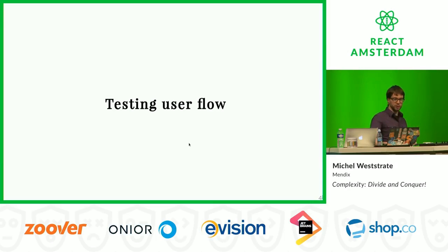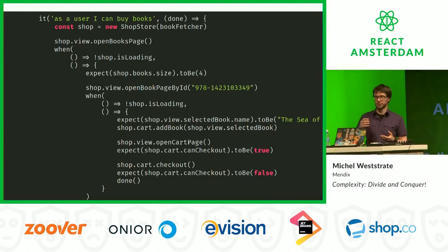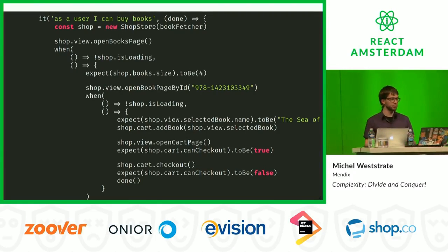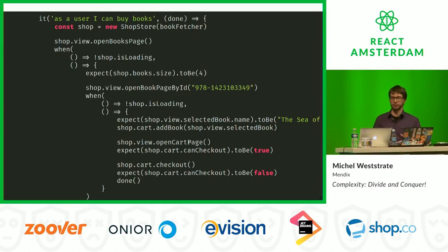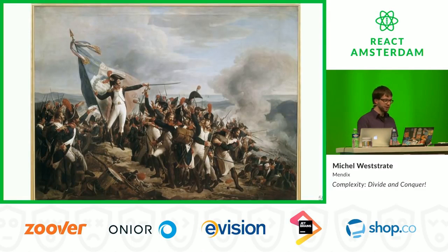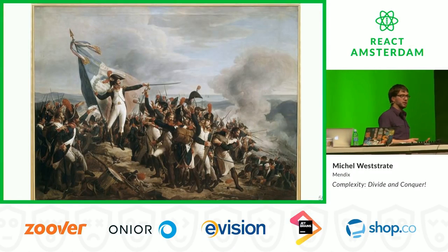At this point we can start testing user flows - user scenarios - even without any UI. We can say: when the person opens the shop, expect the correct books to be loaded; navigate to a specific book, add it to the cart, check it out. We can transition through the entire application completely without UI. That means we can conquer the first army: testing our logic.